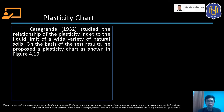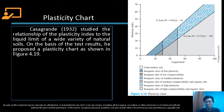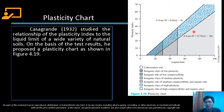So let's now talk about the plasticity chart. Casagrande in 1932 studied the relationship of the plasticity index to the liquid limit of a wide variety of natural soils. On the basis of the test results, he proposed a plasticity chart as shown in Figure 4.19. The x-axis is for the liquid limit and the y-axis is for the plasticity index. If we have a value for liquid limit and plasticity index, we just plot it on this chart.